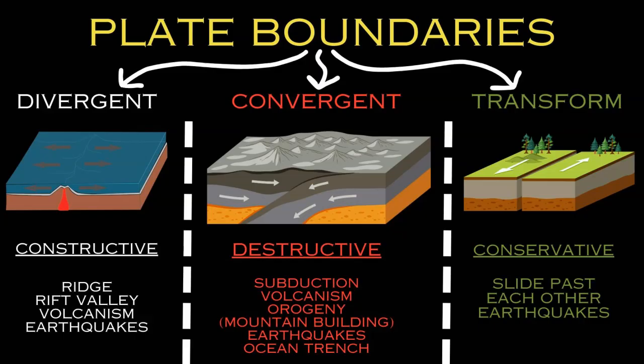Convergent plate boundaries are where the plates are moving towards each other and converging to collide, and there are many features linked with this type of boundary. There are three variations based on the two plate types converging: oceanic plates are thinner and basaltic, while continental plates are thicker and made mostly of granite and andesite. The three variations are: oceanic against oceanic, continental against continental, and a mixture of oceanic and continental.